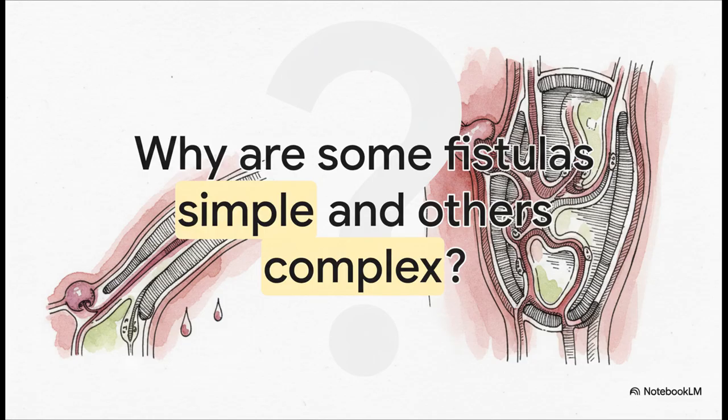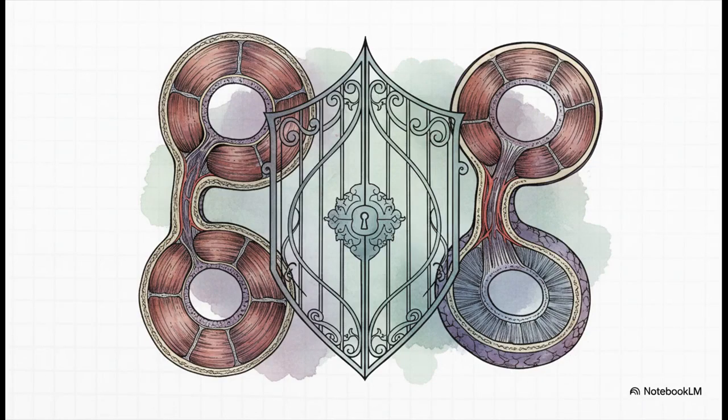One of the first things your surgeon is going to figure out is whether your fistula is simple or complex. This distinction is probably the most important factor when it comes to deciding on the best treatment. It all comes down to your sphincter muscles. A great way to think about these muscles is as gatekeepers — they literally control your bowels. Their job is absolutely critical, which is why protecting them is priority number one during any kind of treatment.